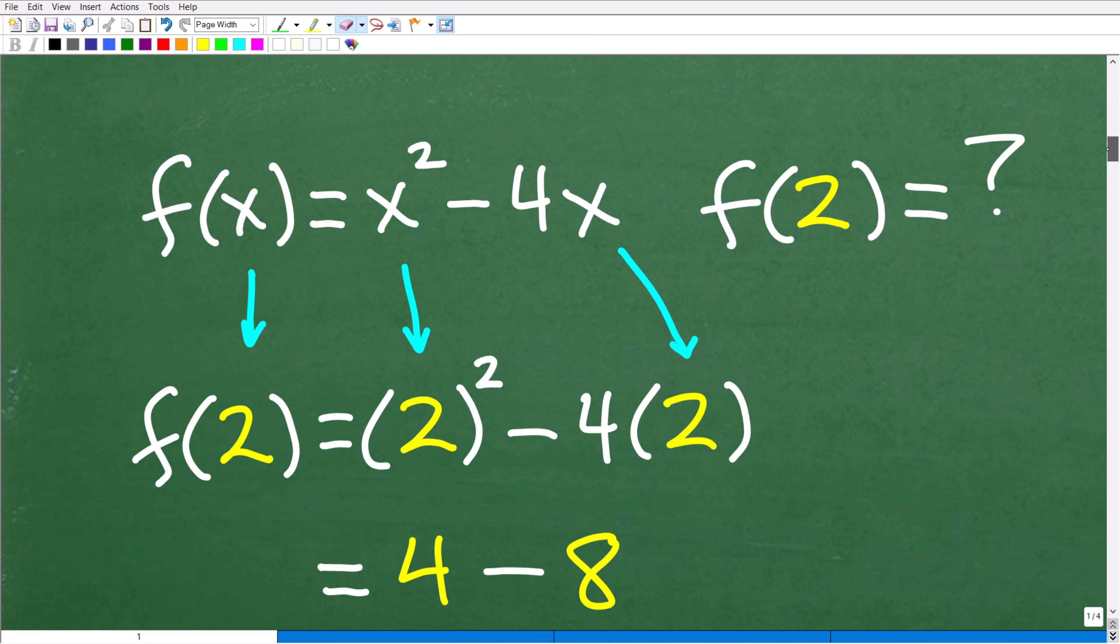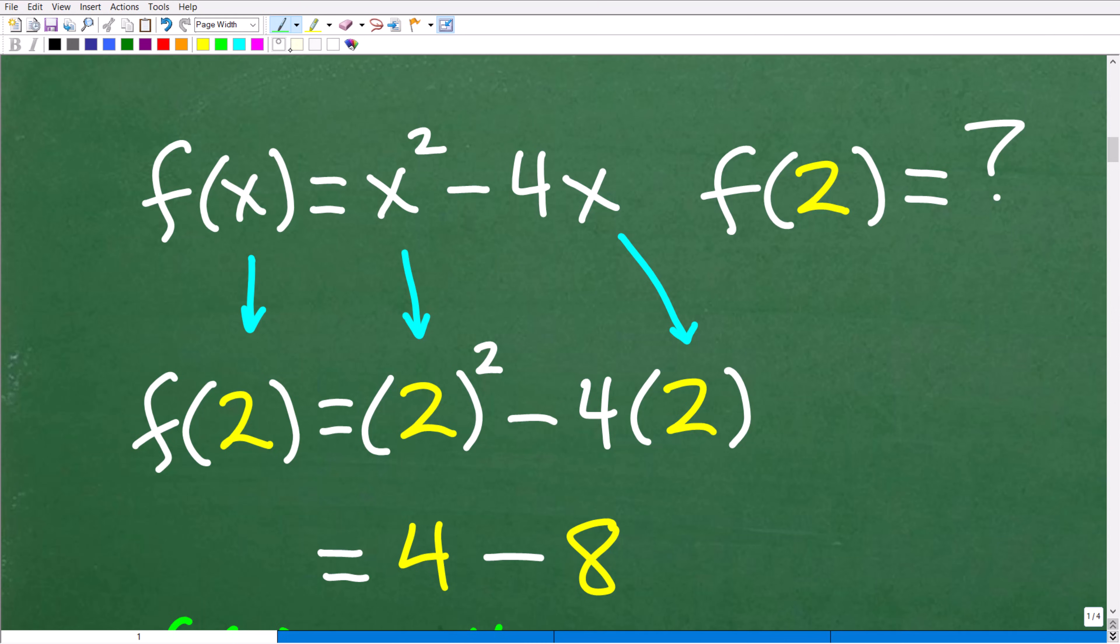Here is our function. If we want to evaluate the function for 2, we would say evaluate this function for f(2). That's a big word in mathematics, evaluate, but all we're saying here is replace this x with 2. So if we're going to replace this x with 2, we've got to replace all these x's right here with 2 as well.